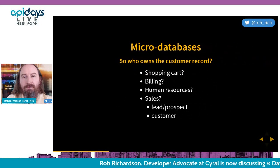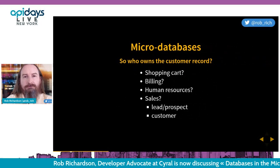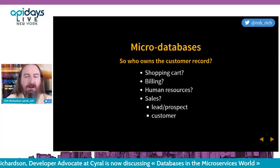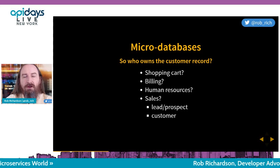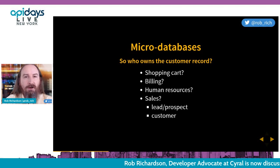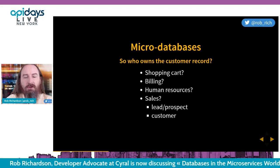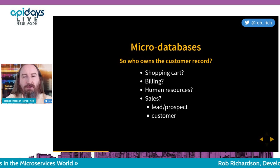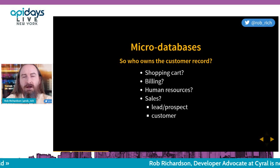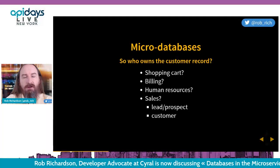Another concern is how do we store the customer record? This customer record is owned by a lot of different places, each with additional metadata. A shopping cart is producing orders — maybe they should own the customer record. Billing has credit card numbers stored, and we definitely don't want those leaking out. Human resources has lots of secrets. Sales created the customer in the first place. So who should own the customer record?